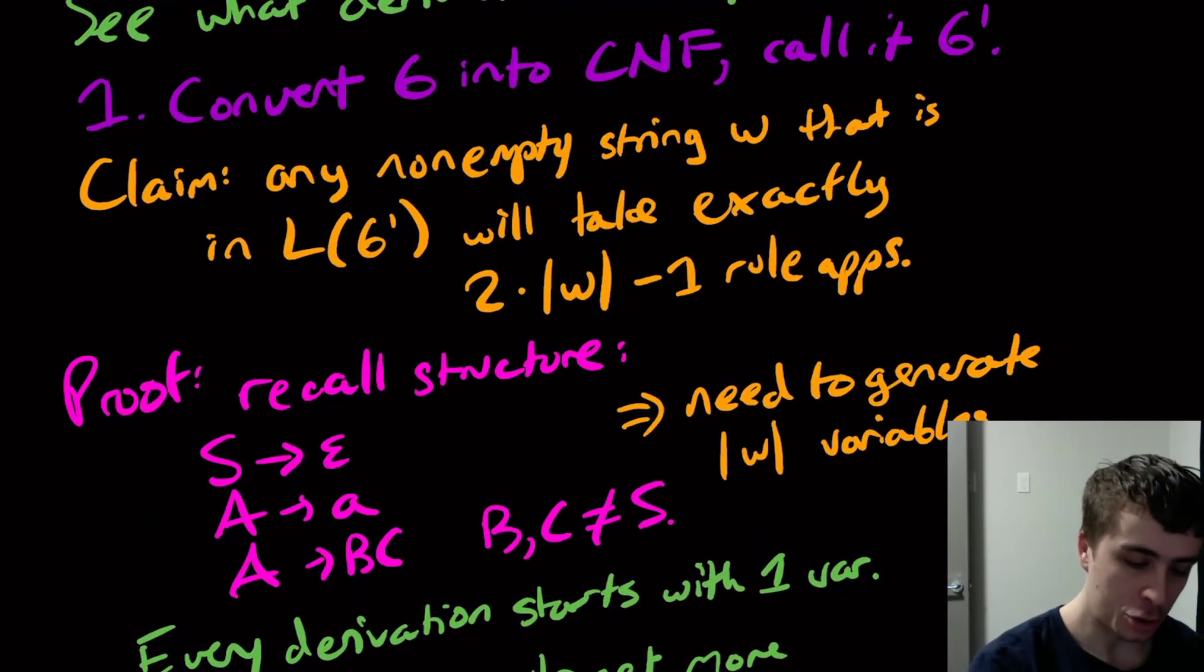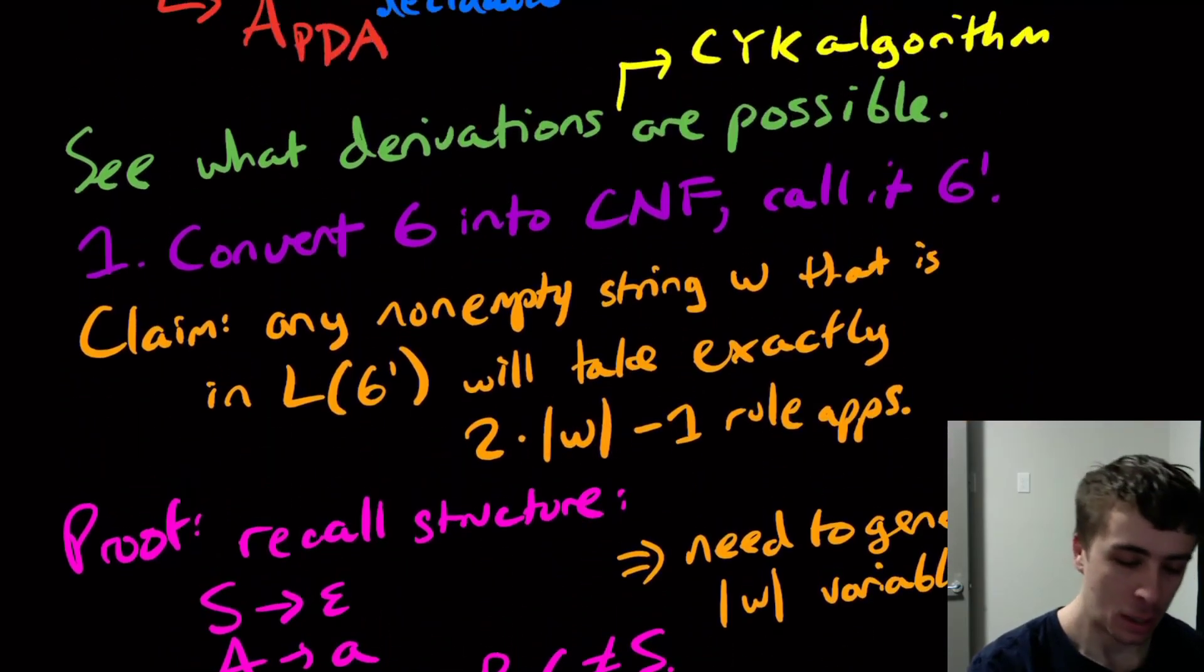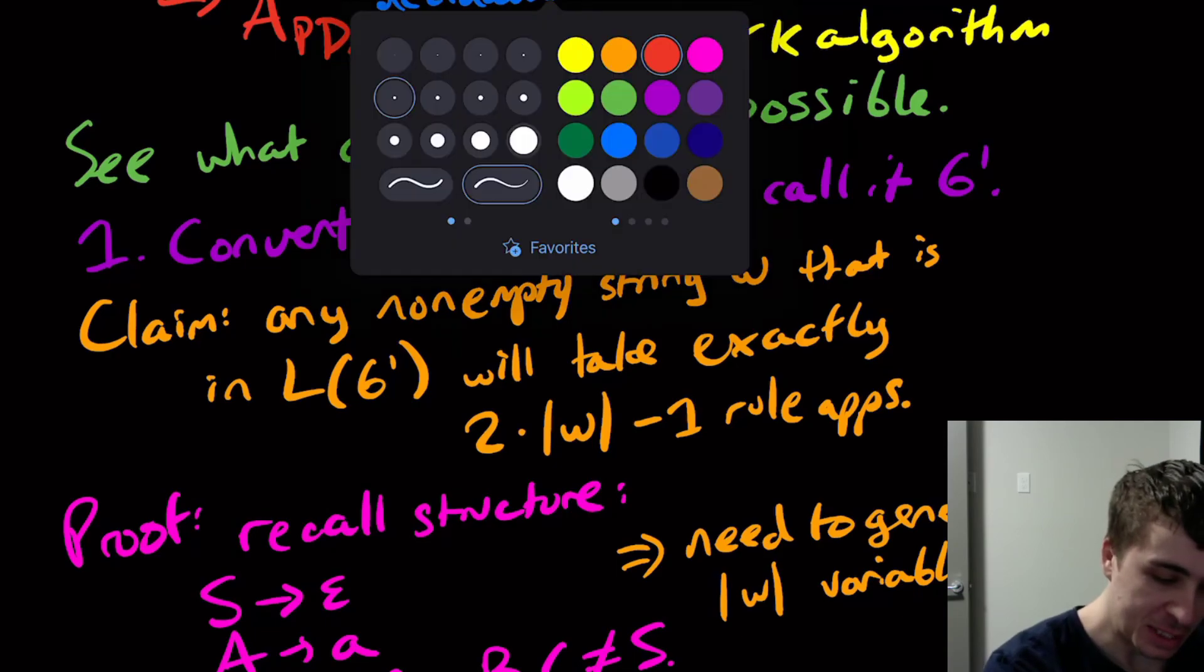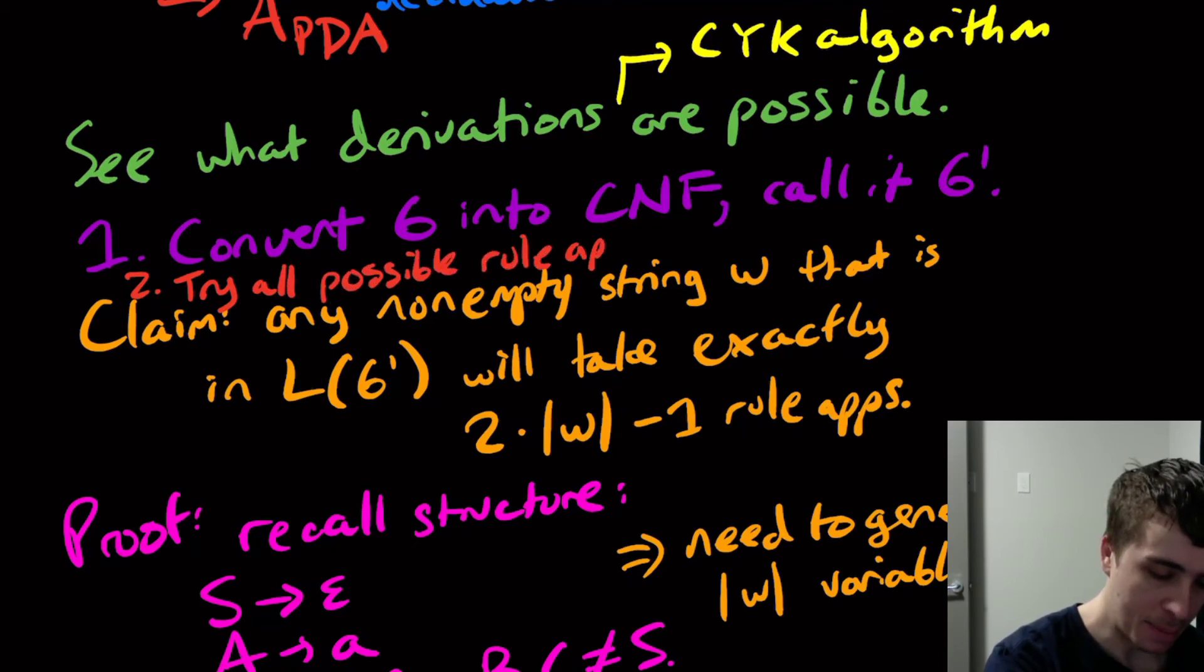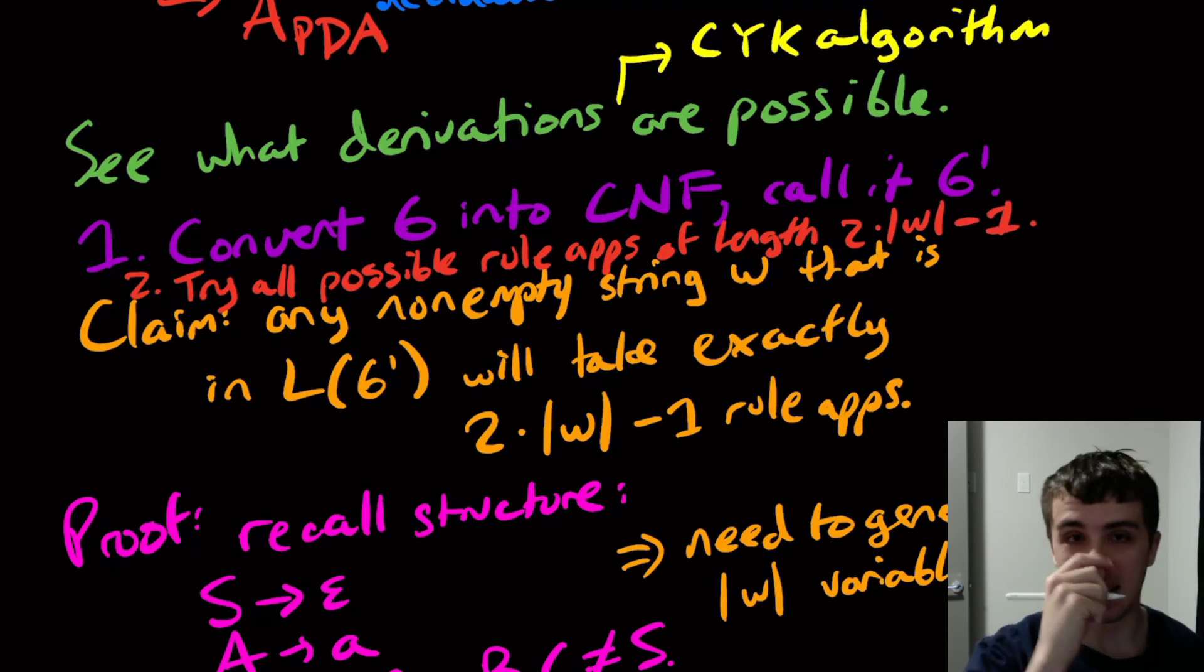All right, so that shows that every non-empty string in a grammar that's in Chomsky normal form will take exactly that many rule applications here. So the second step that we would need to do then, right here, is try all possible rule applications of length 2 times the length of w minus 1. And if any of them succeed, accept. If none of them work, reject. And that's it.